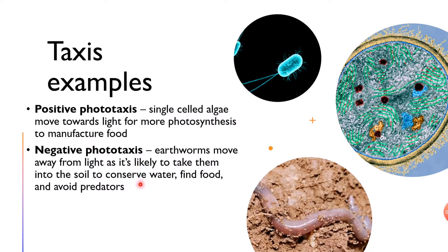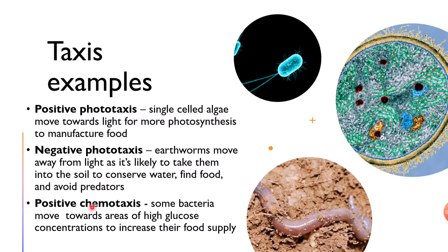There is also positive chemotaxis, where some bacteria move towards areas of high glucose concentration. This increases their food supply. Positive chemotaxis is moving towards a chemical stimulus — in this example, high glucose concentrations.